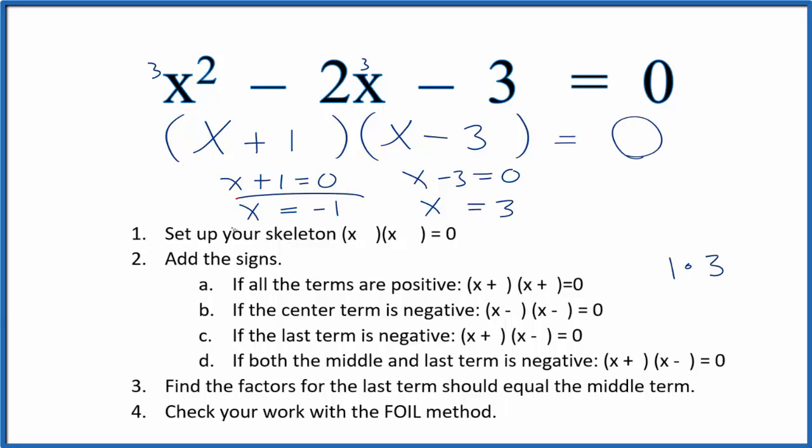This is Dr. B solving the equation x squared minus 2x minus 3 equals 0 by factoring. You could also use the quadratic equation and you would get these same answers right here. Thanks for watching.